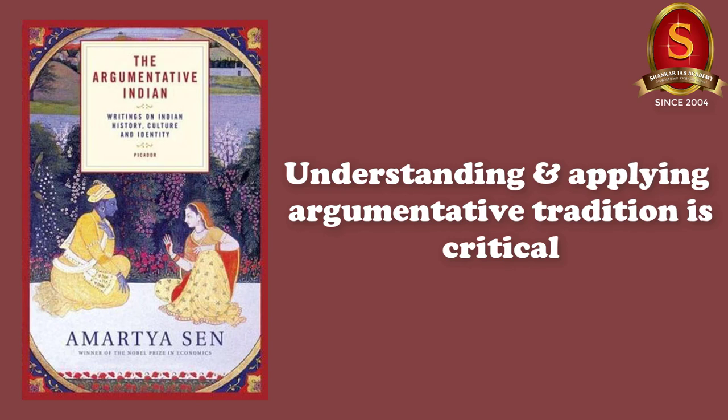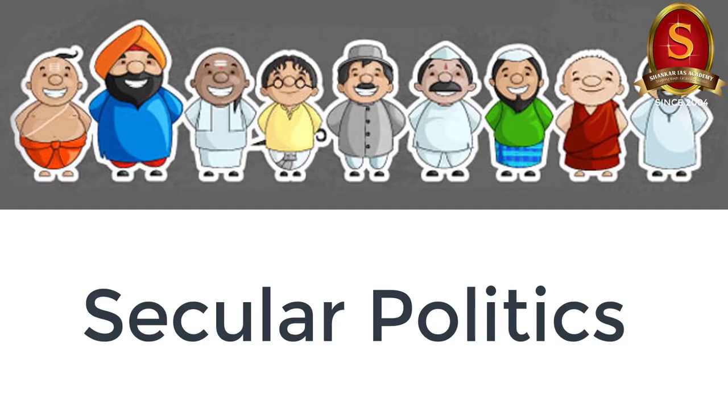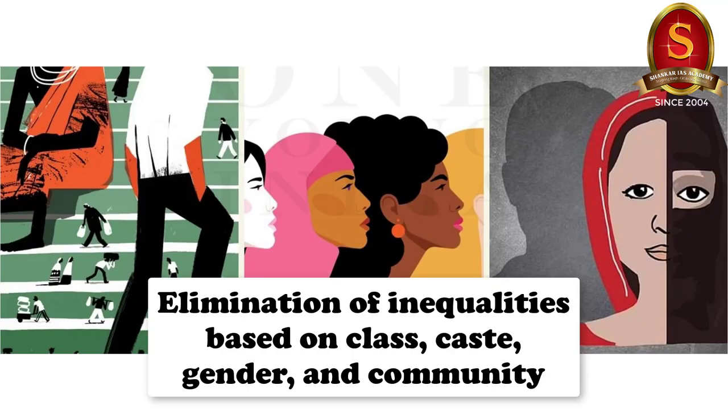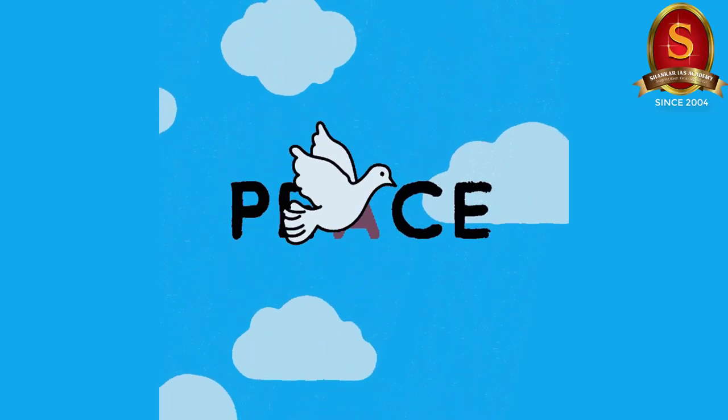The next book is The Argumentative Indian written by Amartya Sen. We all know Amartya Sen for his key contributions to research on fundamental problems in welfare economics. In this book, Sen argues that understanding and applying argumentative tradition is crucial for the success of India's democracy, the defense of its secular politics, the elimination of inequality based on class, caste, gender, and community, and the pursuit of subcontinental peace. It is an excellent book but not written in the simplest language. I would not recommend it to those giving their first attempt or those without prior knowledge of Indian society and history. But for those with a basic idea of India and a good command of English, this book is a gem.